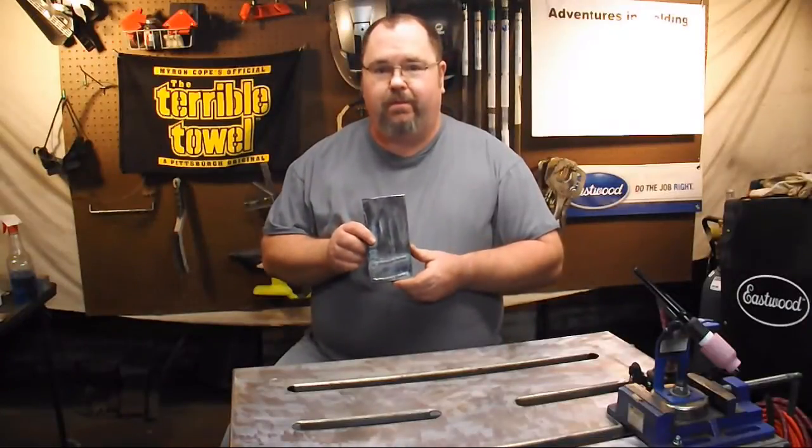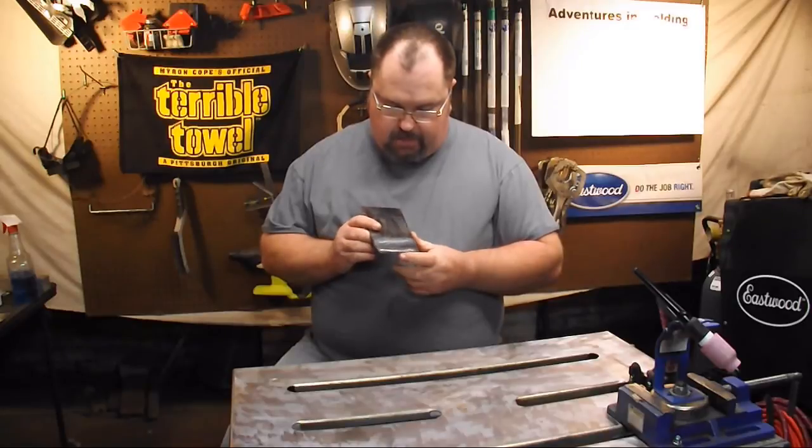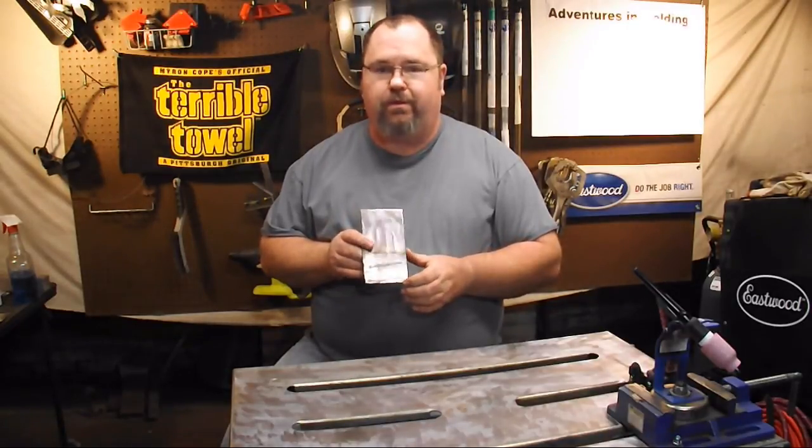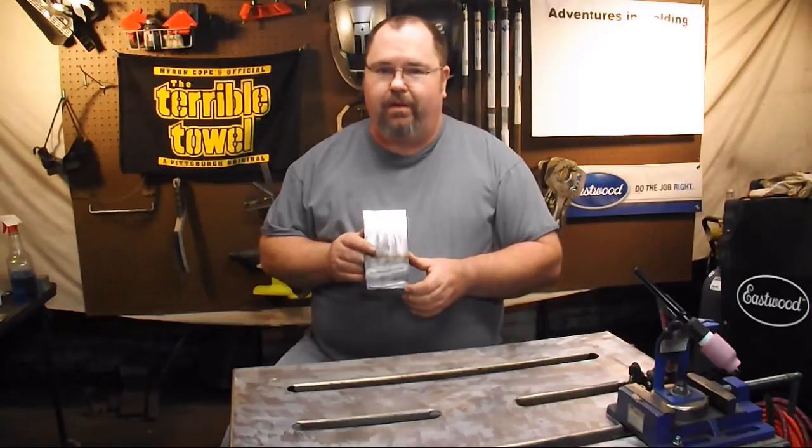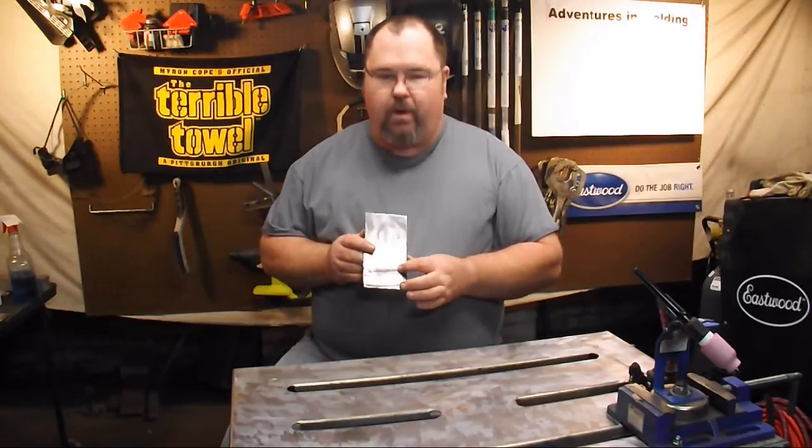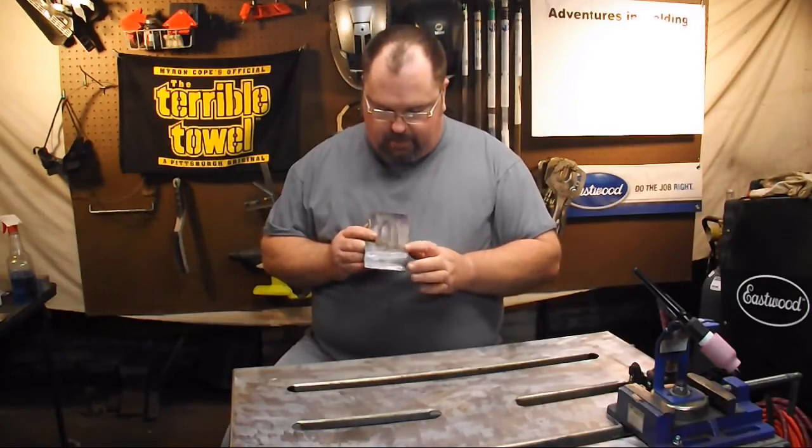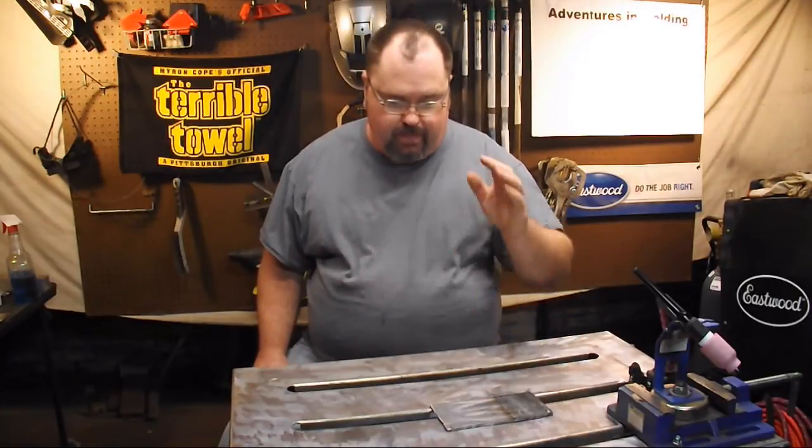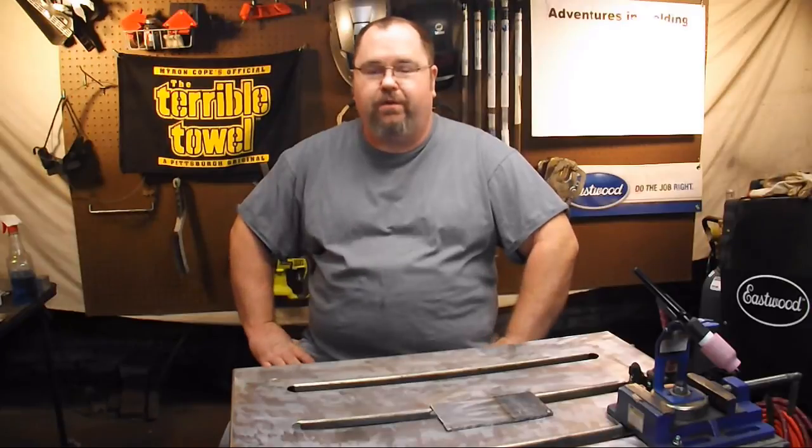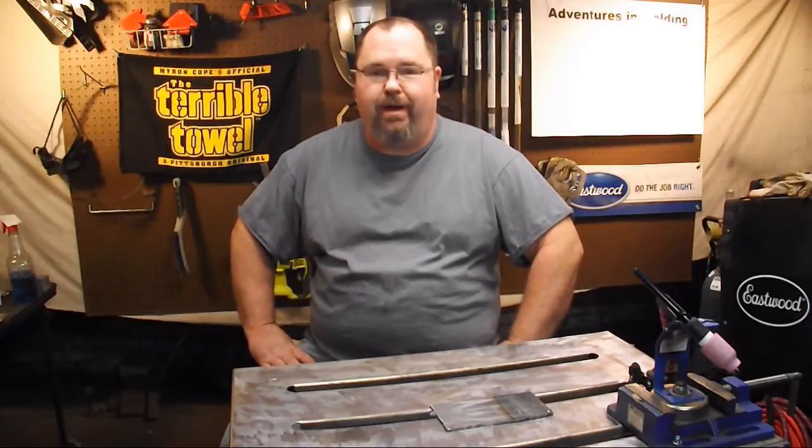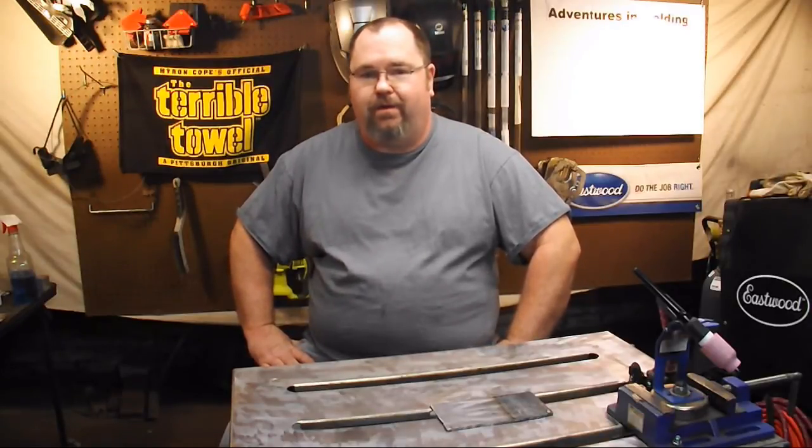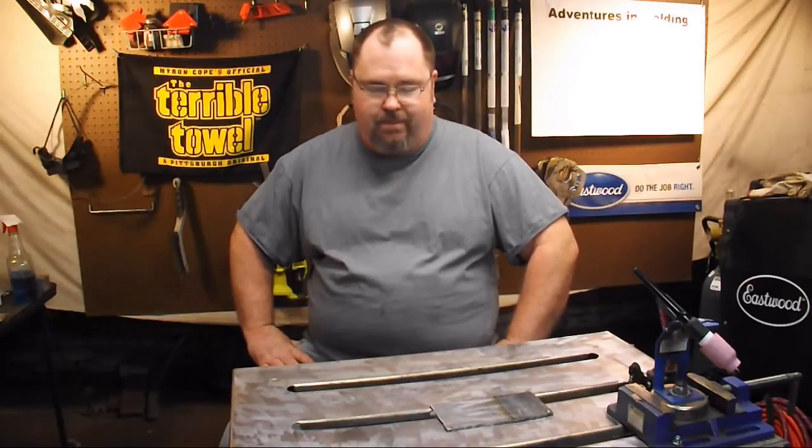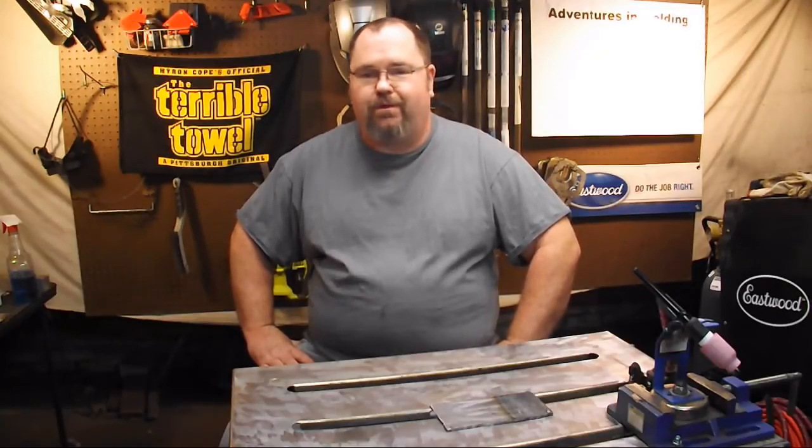So guys, there you have it. Nice tight arc length puts considerably less heat into the metal, which causes less distortion, less damage to the metal. A long arc length puts a lot more heat in, makes for a cruddy looking weld. I hope that answered some of your questions. Please feel free to ask any more you have. My email is tigmaniac at gmail.com. Thanks for joining me on this Adventures.